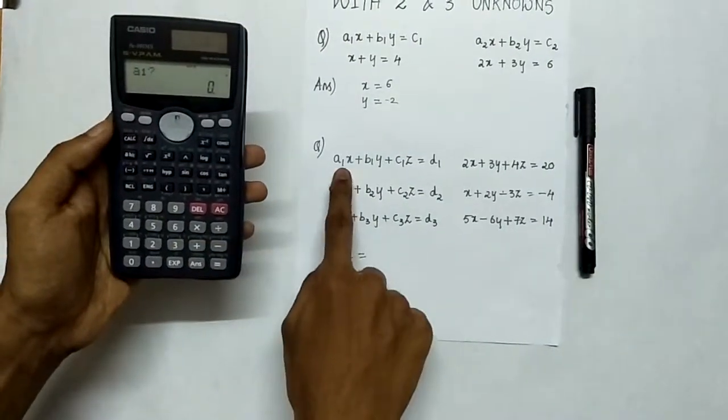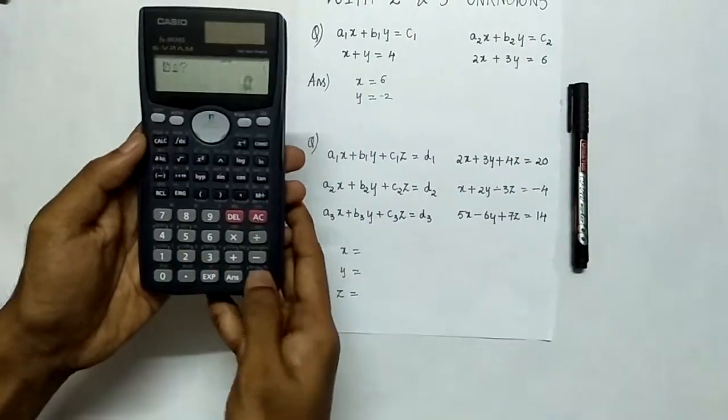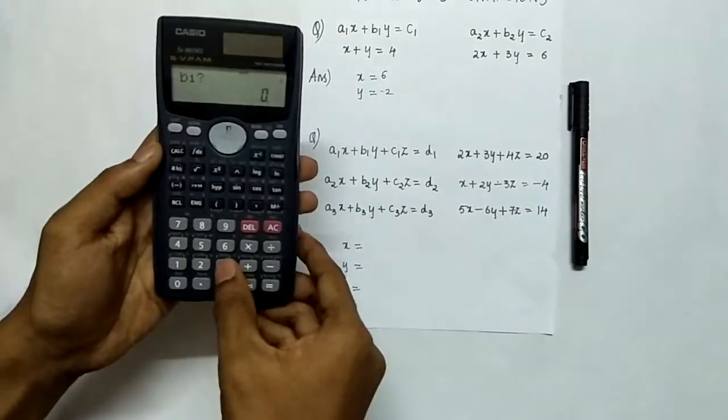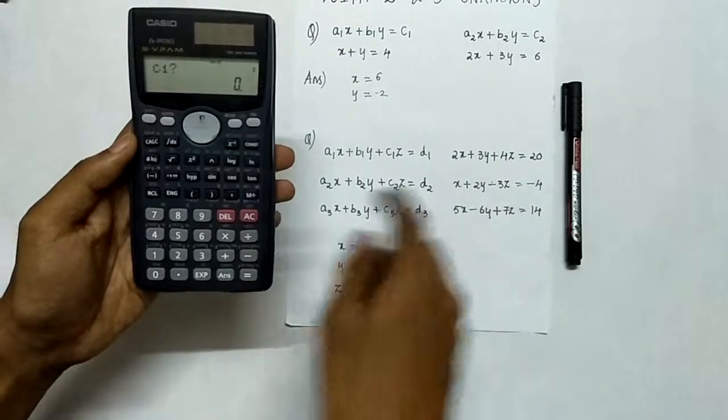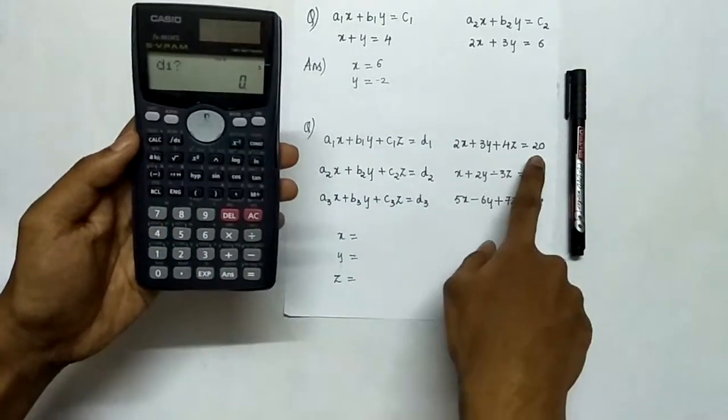Here, coefficient of a1 is 2, enter 2. b1 is 3, c1 is 4, d1 is 20.